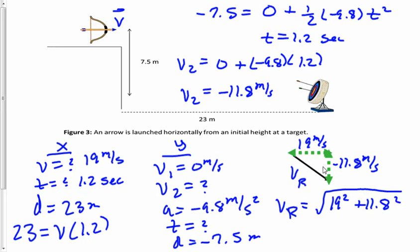So v sub r has a value of 22 meters per second. Now that's the hypotenuse's value. There is an angle theta that the vector also needs to be listed at, because remember, there are four things for every vector.